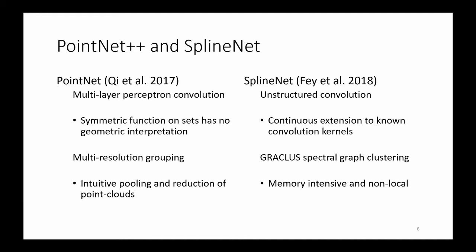For our purposes we want interpretable results. That is, any patterns in the intermediate layers of our network should have an intuitive representation and visualization. In this work we combine these two approaches. PointNet gives us an intuitive notion of pooling and SplineNet gives us an intuitive notion of convolution.